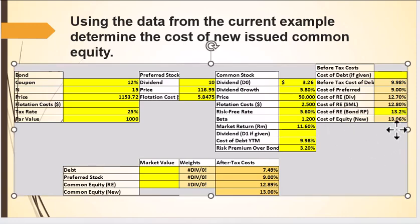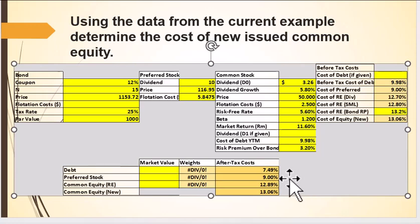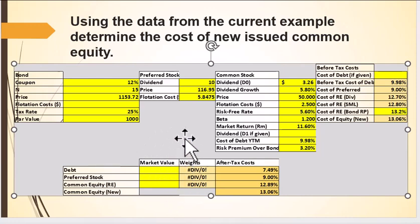We now have our four costs. The after-tax cost of debt is 7.49%, preferred stock is 9%, the average cost of retained earnings is around 12.89%, and the new common equity cost is 13.06%. Moving forward, we need to discuss how we use these numbers to determine what assets we want to purchase. In the next part, we'll talk about market values and how we've chosen to finance our company. See you in the next video.